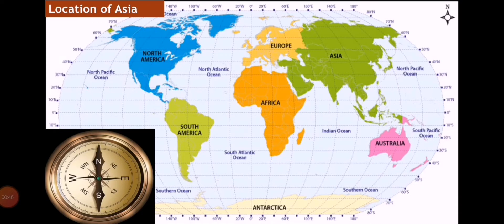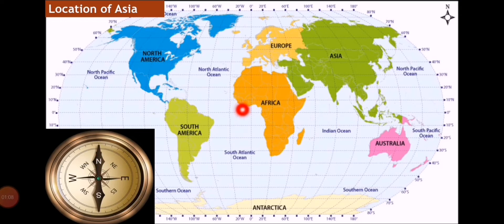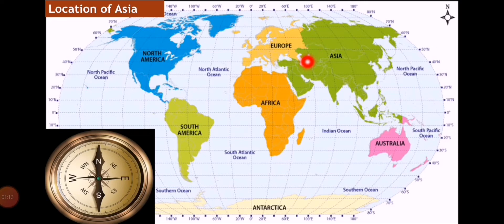China and Pakistan are both located in the continent of Asia, which is near Europe, the North Pacific Ocean, and the Indian Ocean. Asia is located on the northeastern side of the world. China is located in the northeast side of Pakistan. Pakistan has four neighboring countries: China, India, Iran, and Afghanistan, and in the south we have the Arabian Sea.